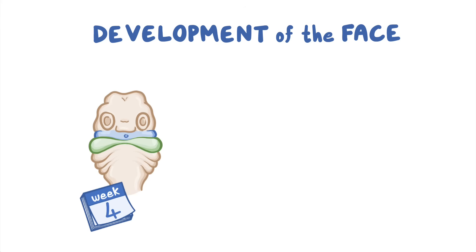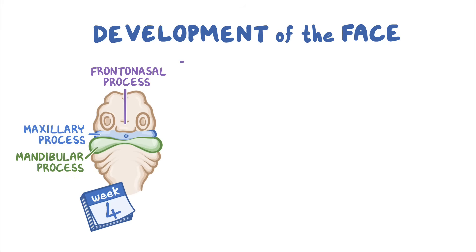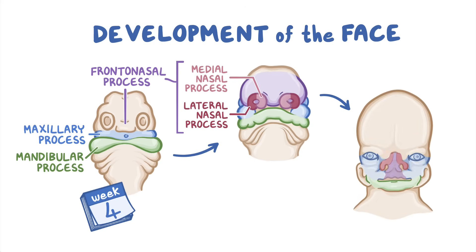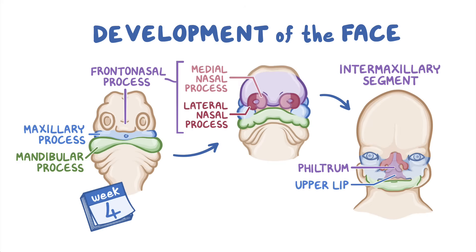As a quick recap: development of the face begins by week 4 of development from three main structures — the frontonasal process, maxillary process, and mandibular process. The frontonasal process gives rise to the medial and lateral nasal processes. The two medial nasal processes merge in the midline, forming the intermaxillary segment, which gives rise to the philtrum of the lip. The fusion of the maxillary processes with the intermaxillary segment on both sides completes the formation of the upper lip, and the mandibular process gives rise to the lower jaw.